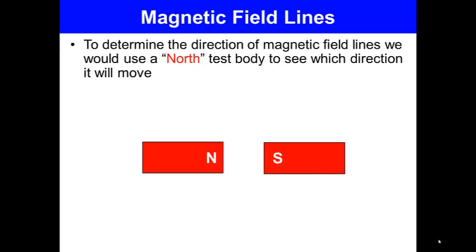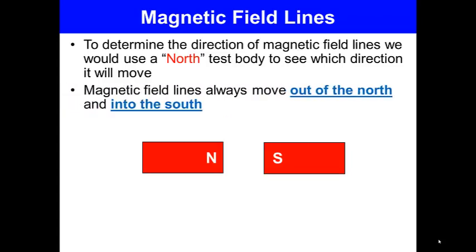To determine the direction of a magnetic field line, we use a north test body to see which direction it will move. Magnetic field lines always move out of the north and into the south.